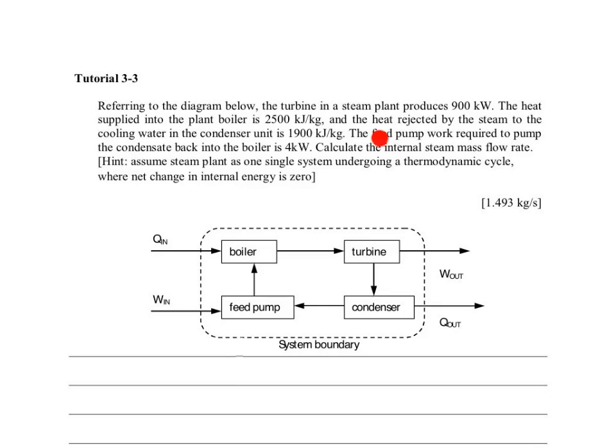The feed pump work required to pump the condensate back into the boiler is 4 kilowatts. Compare that to the 900 kilowatts from the turbine.